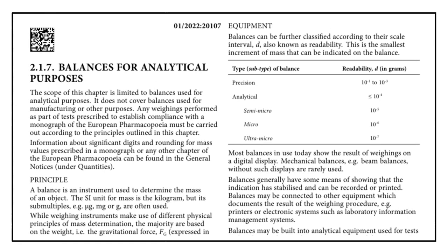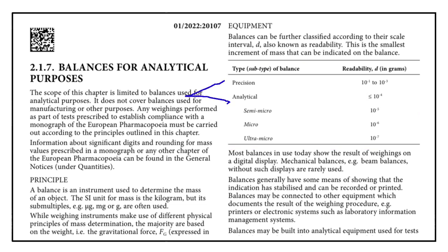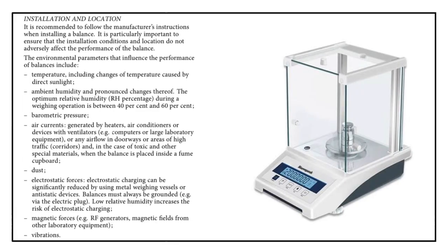EP chapter 2.1.7 classifies analytical balances into two major types: precision balances and analytical balances. Analytical balances are further classified into three types: semi-micro balances, micro balances, and ultra-micro balances. A separate video on the types of balances is available in the description for more details.